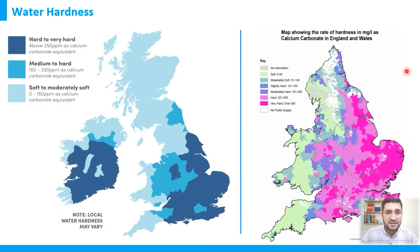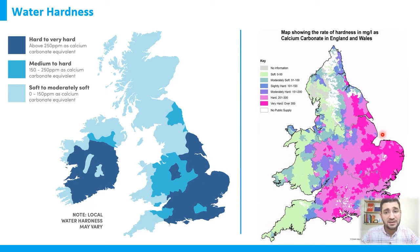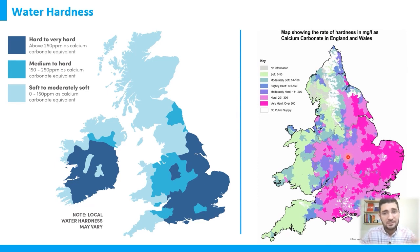This same concept applies in England, where some areas have very soft water (shown in light green) while others have very hard underground water. The hardness varies significantly based on many geological factors, even within the same country or city.